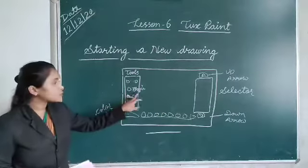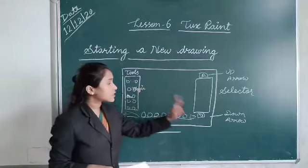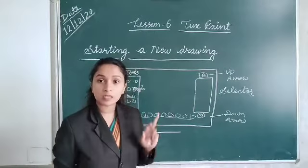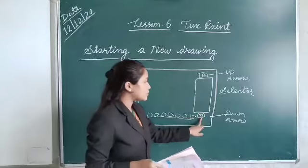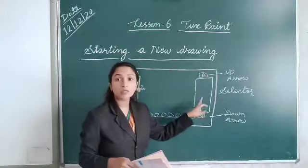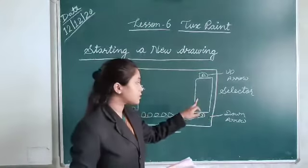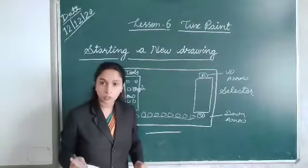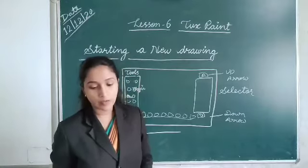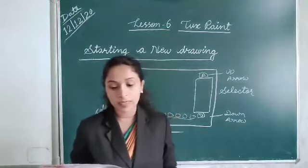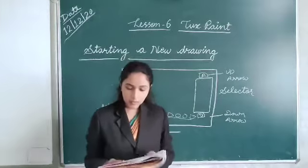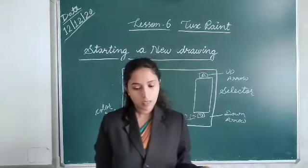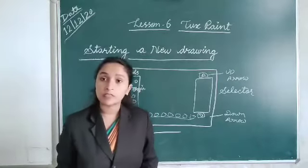For coloring, choose the Magic tool from the toolbox, then click on the down arrow key to get the fill magic effect. Select the fill magic effect, then choose any desired color and fill the color in your drawing. Today we learned about starting a new drawing and coloring a drawing. You have to read your book pages 52, 53 and 54 — this is your homework.